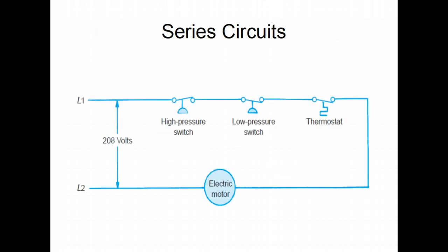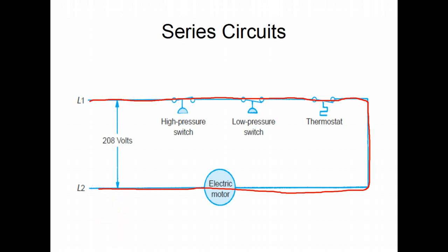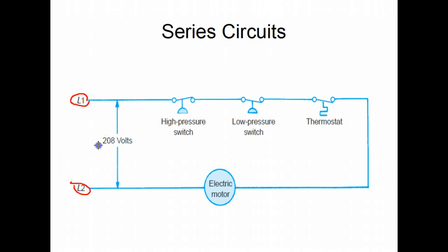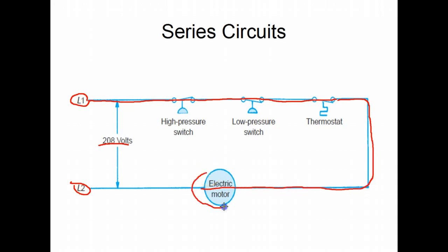The first circuit we're going to look at is a series circuit. It's called a series circuit because all of the components are connected in a straight line between the power source. L1 and L2 are the designators for the power coming in — we have 208 volts. We have the line or path for the current to flow. In this circuit we have one switch — the high pressure switch — two switches with the low pressure switch, and the third switch is the thermostat. All of these must be made or closed, and then the electric motor will operate because we have all four components needed.